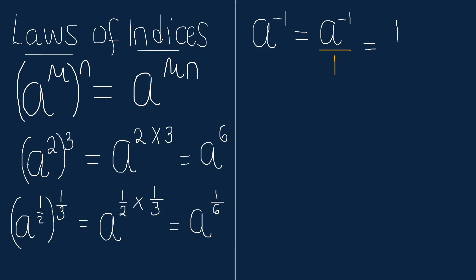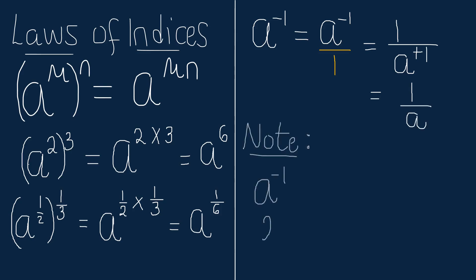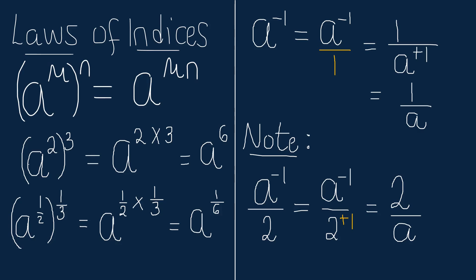Be careful when implementing the reciprocal rule. Consider another instance: A raised to power minus 1 divided by 2 is equal to A raised to power minus 1 divided by 2, raised to power positive 1. If this fractional form gets reciprocated, it becomes 2 raised to power minus 1 divided by A raised to power positive 1. Then 2 raised to power minus 1 becomes 1 half, which is multiplied by 1 upon A, and the result is 1 divided by 2 multiplied by A.